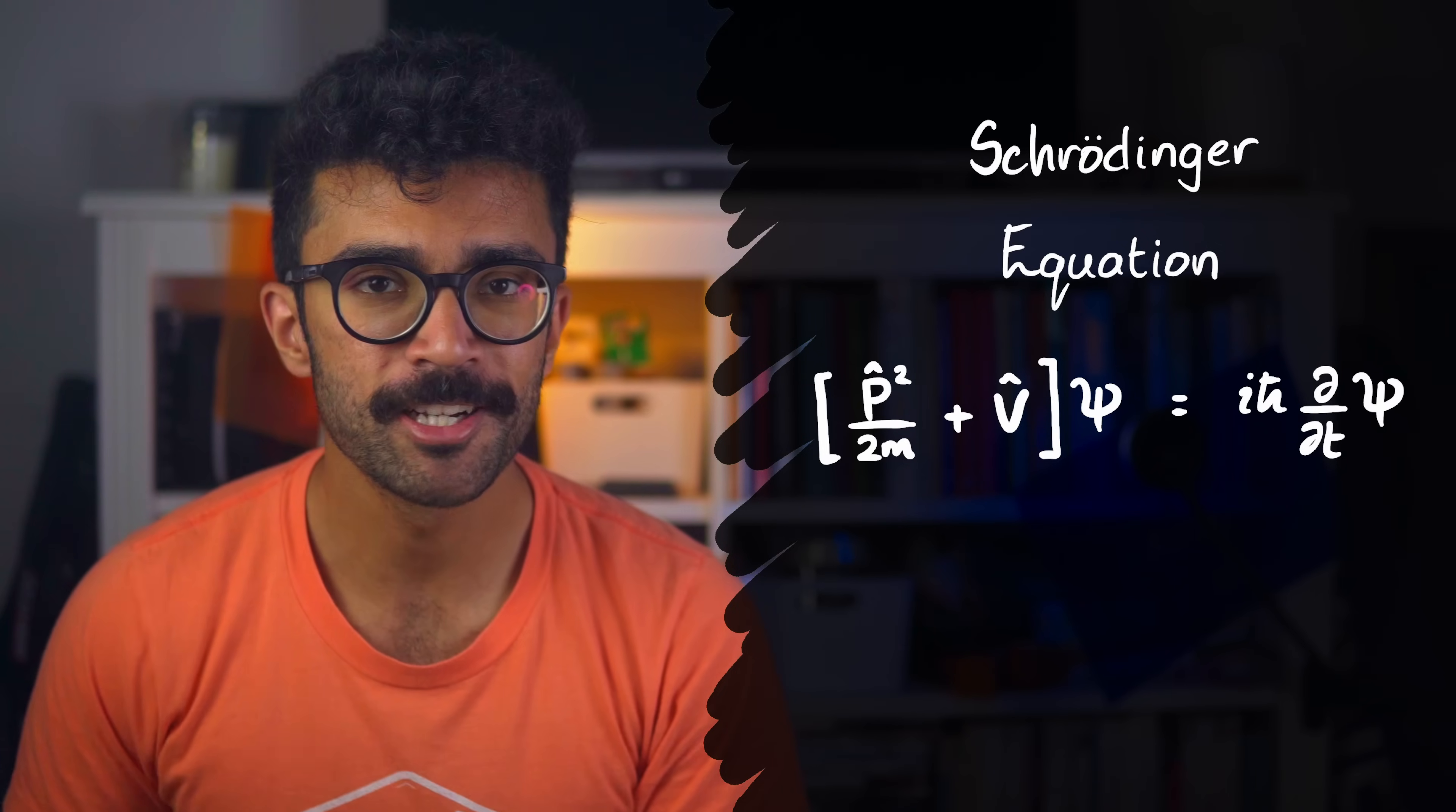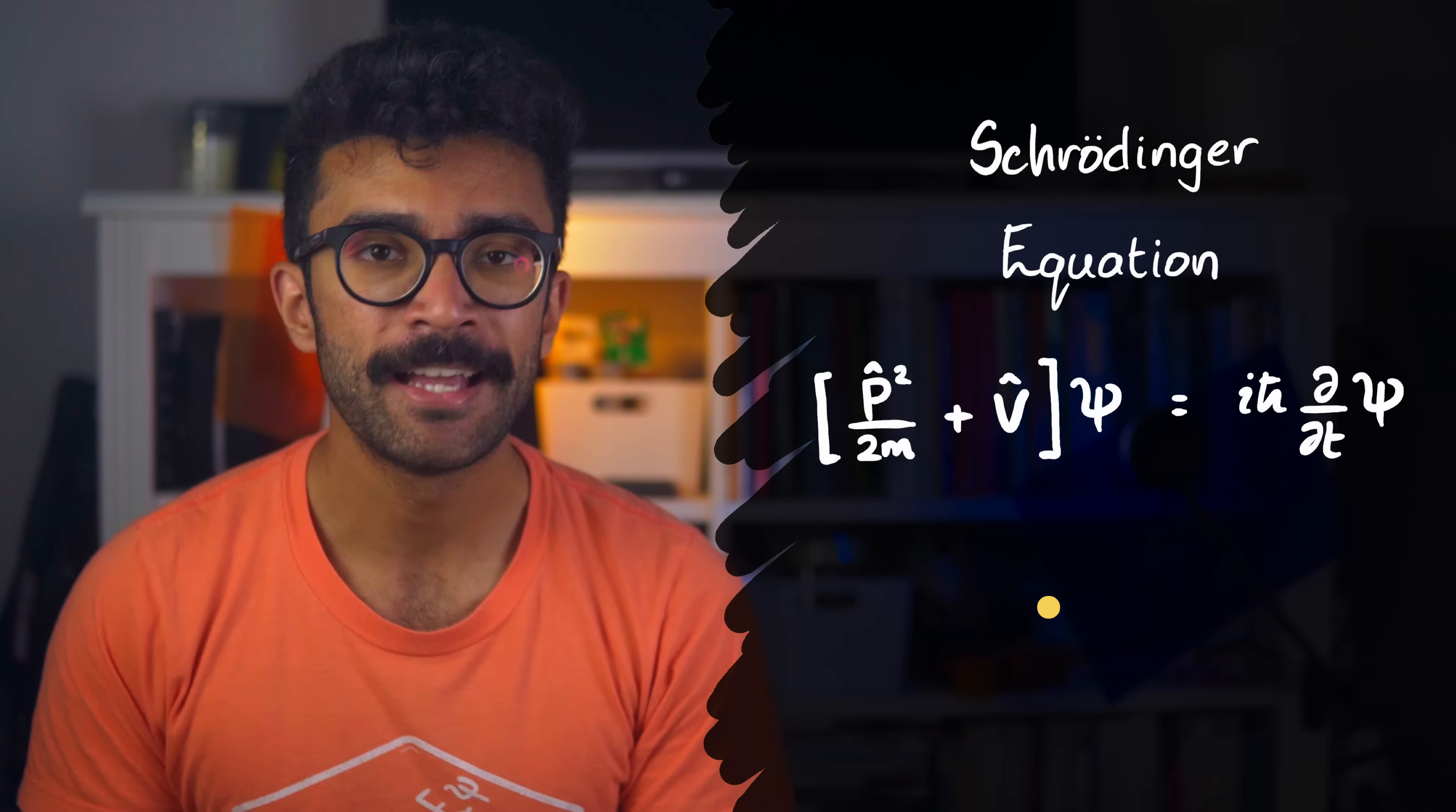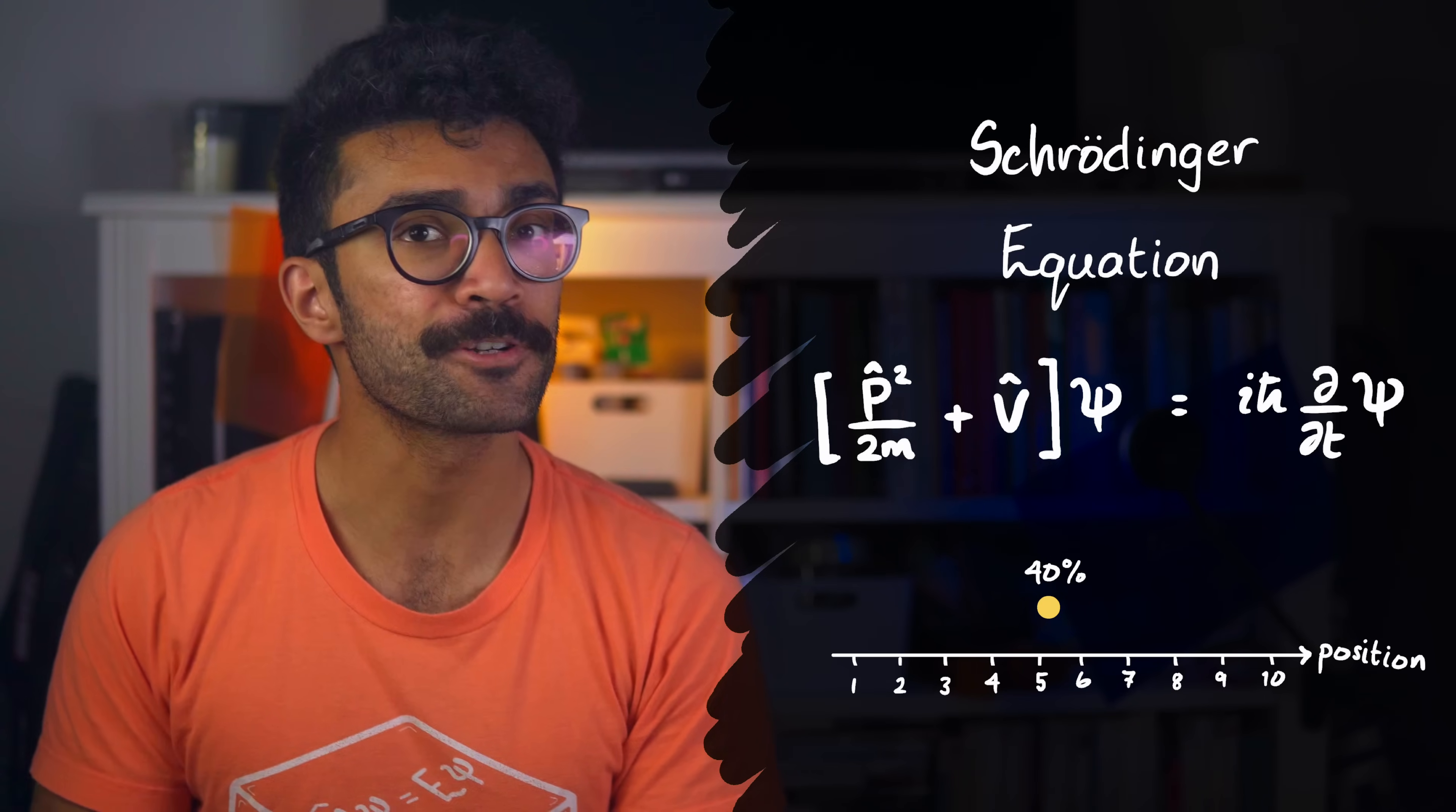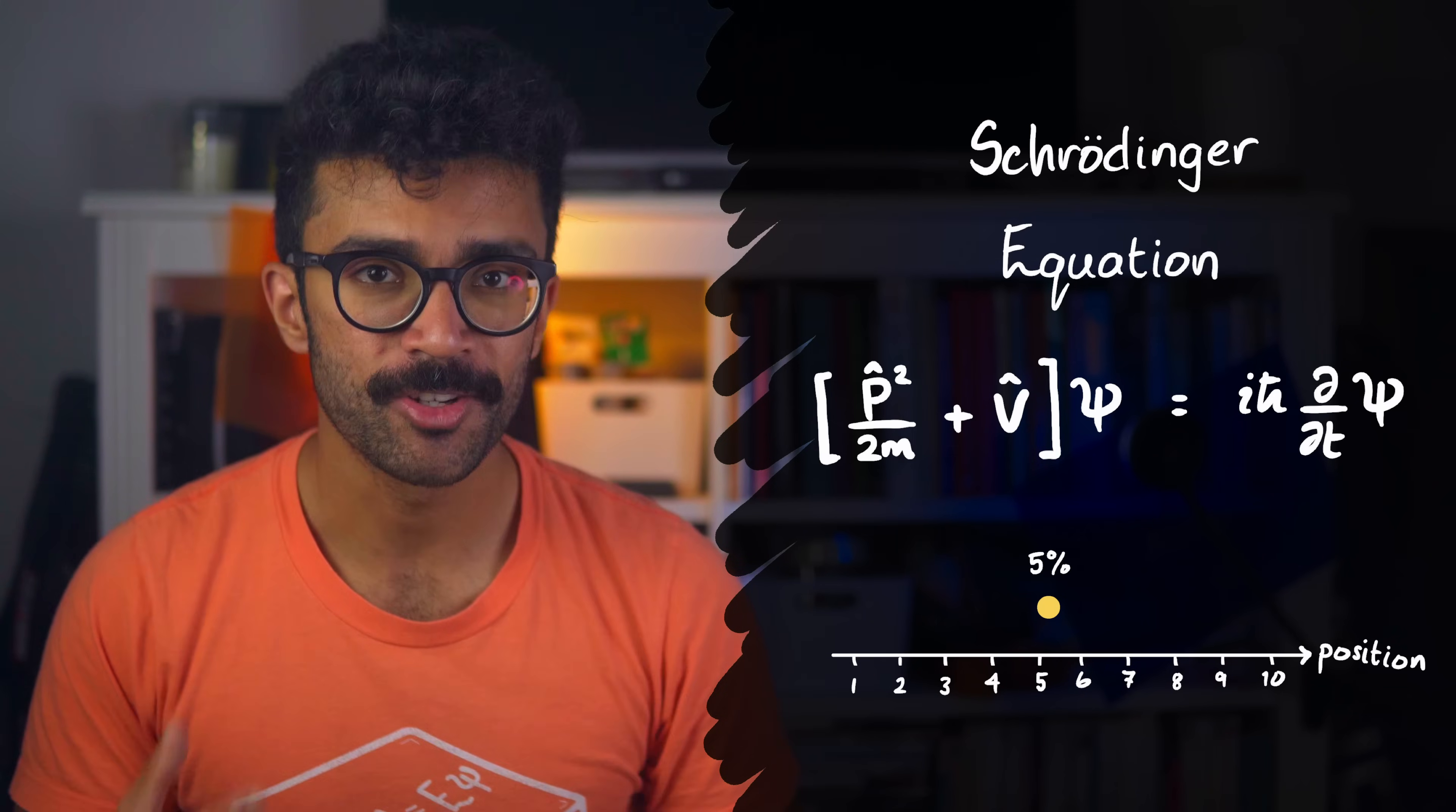The Schrödinger equation is widely regarded as the most important equation in quantum physics. For any system that we're studying, it can describe the probability of finding our system in different states when we make a measurement on it. And it also looks at how these probabilities change over time.